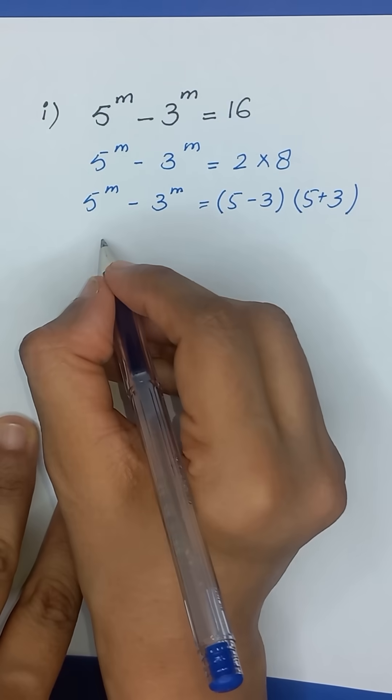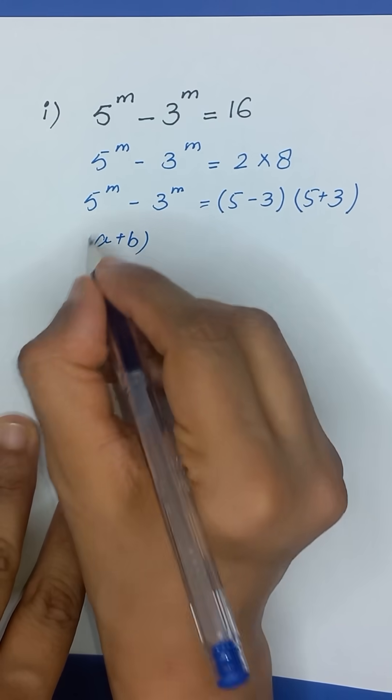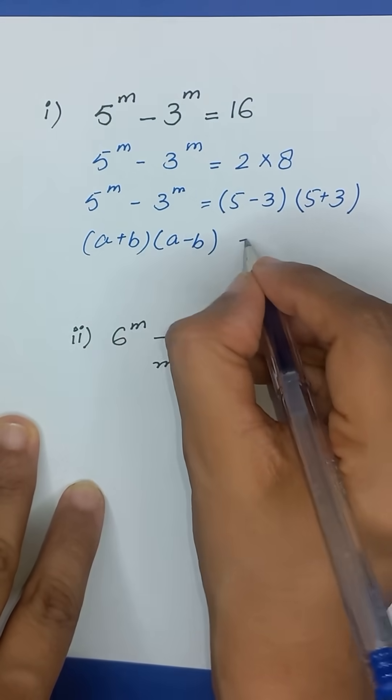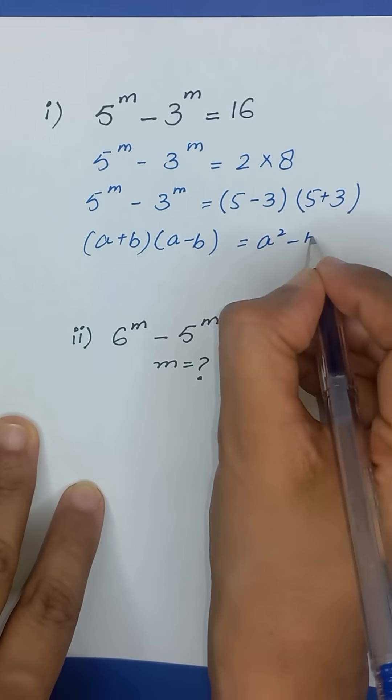Now it is in the form of a plus b times a minus b which is equal to a squared minus b squared, which is an identity.